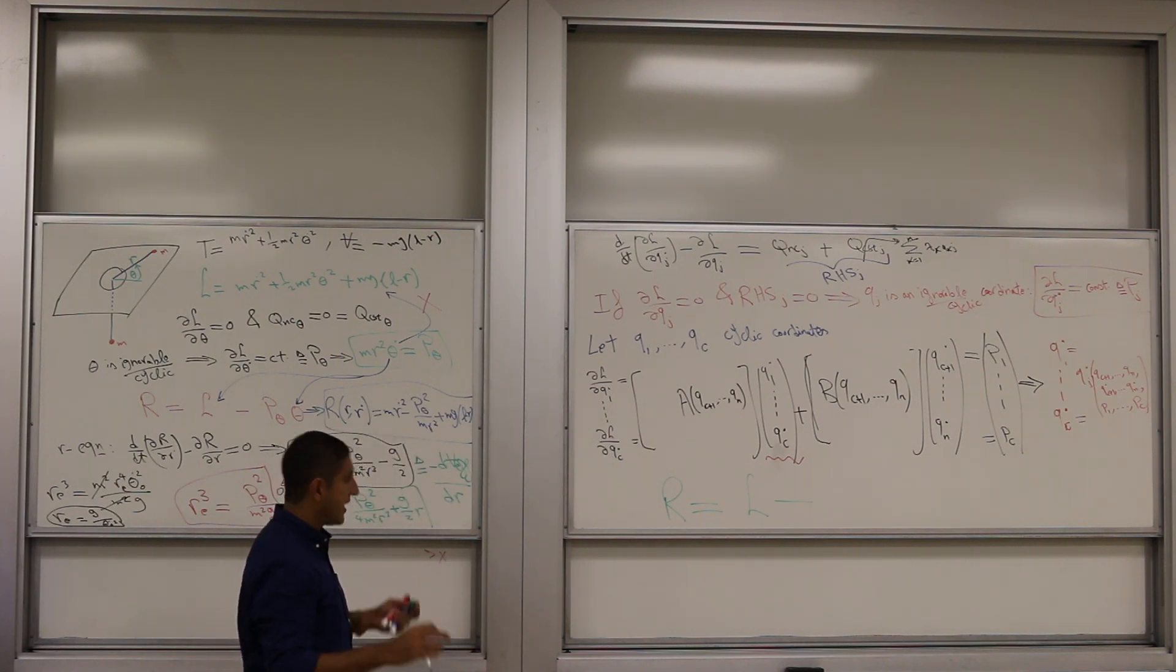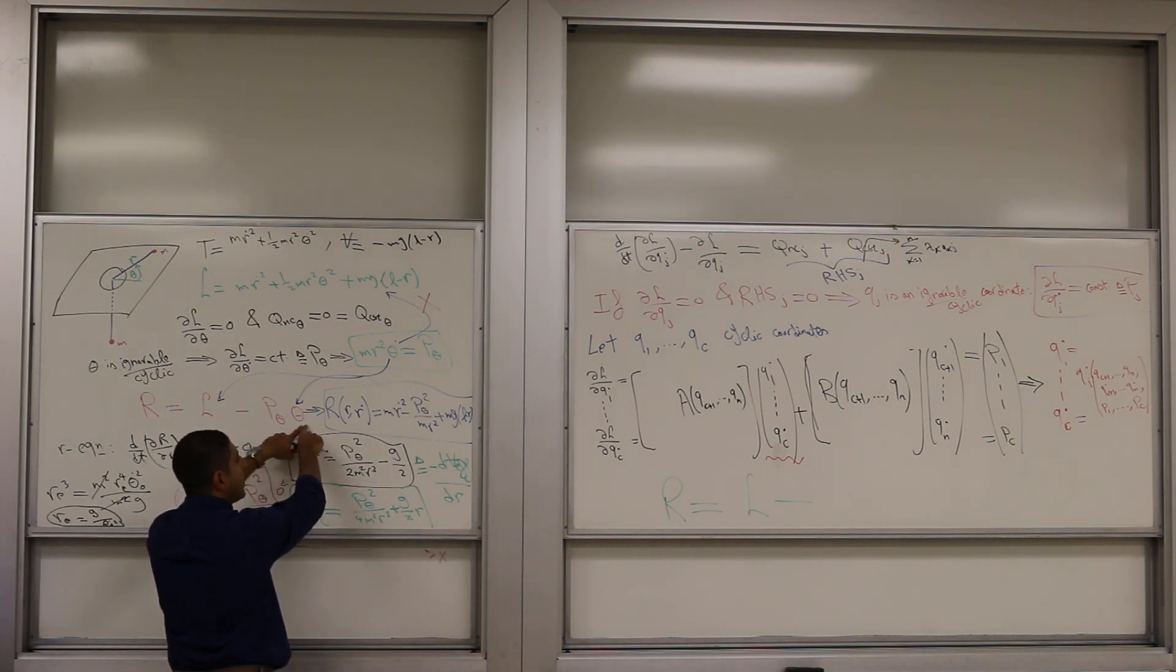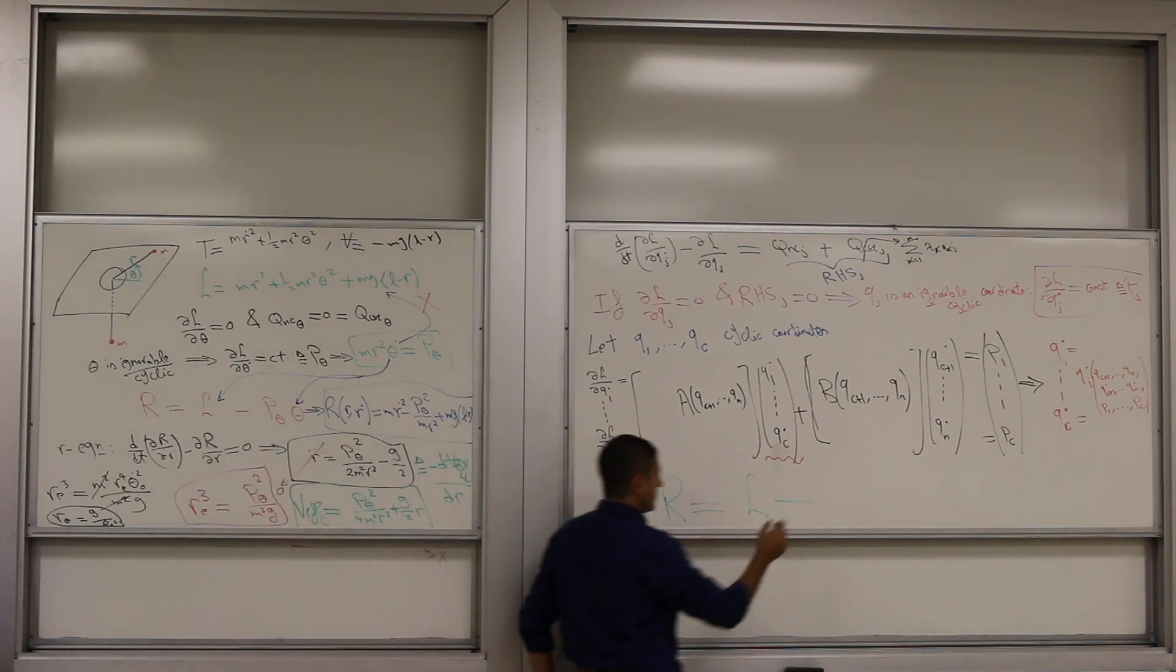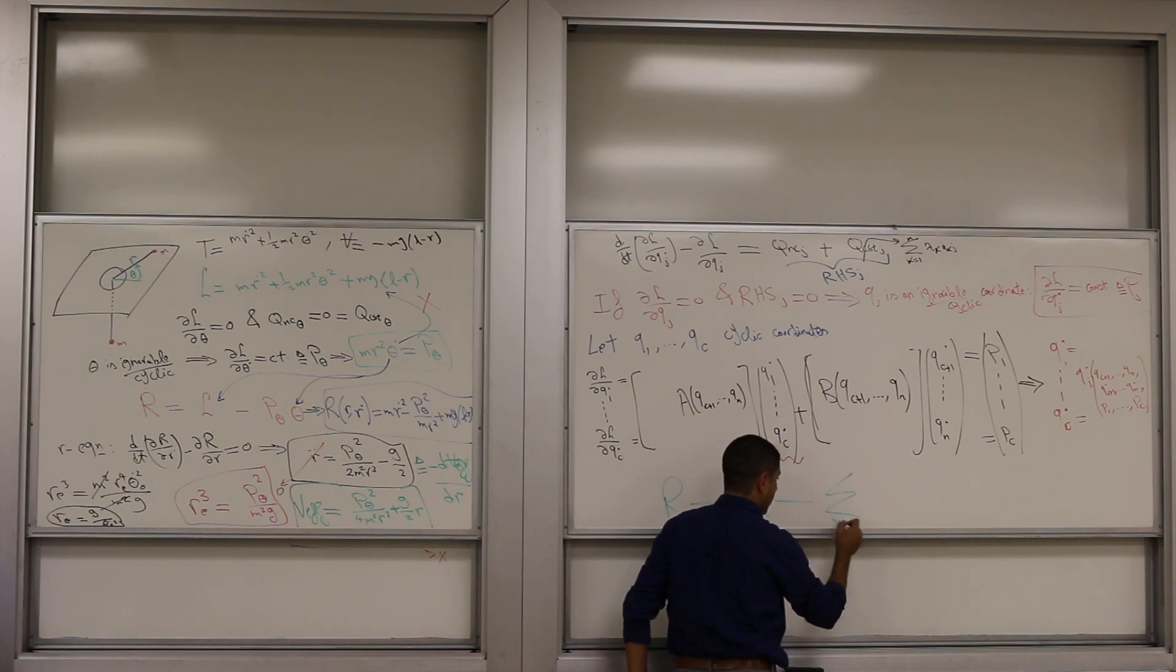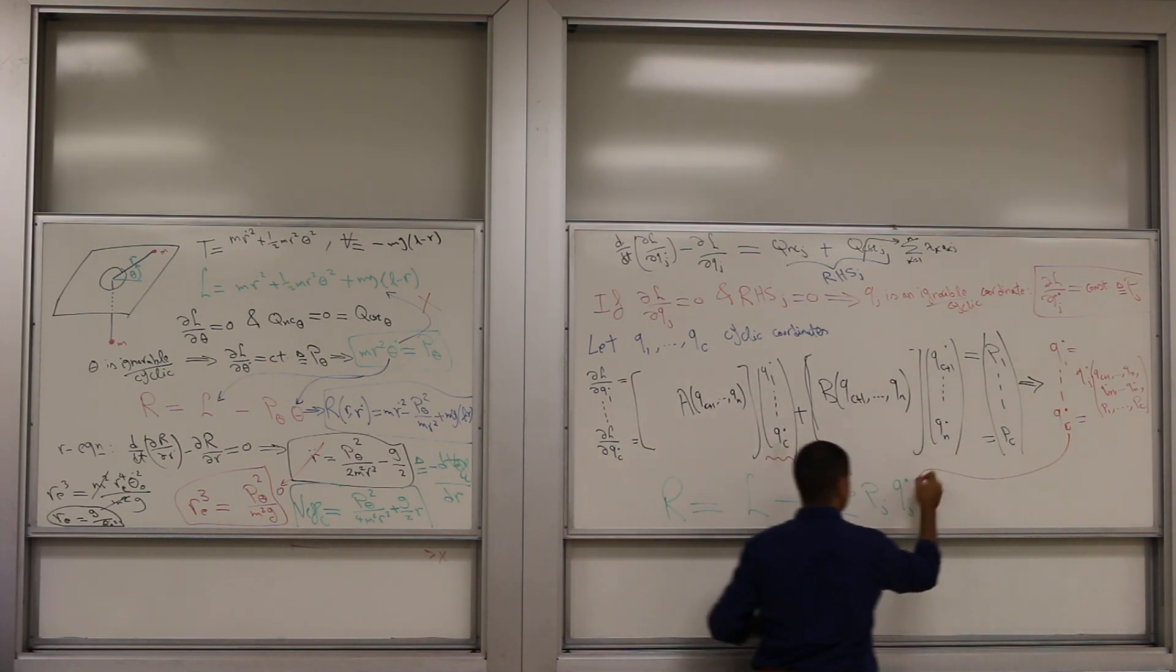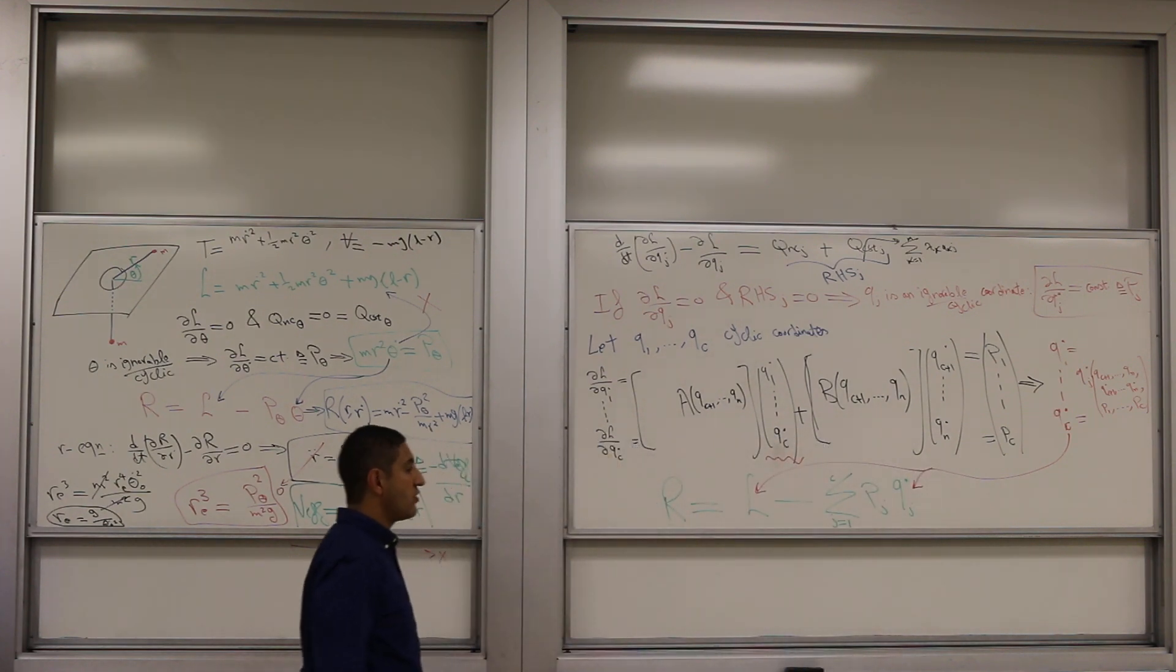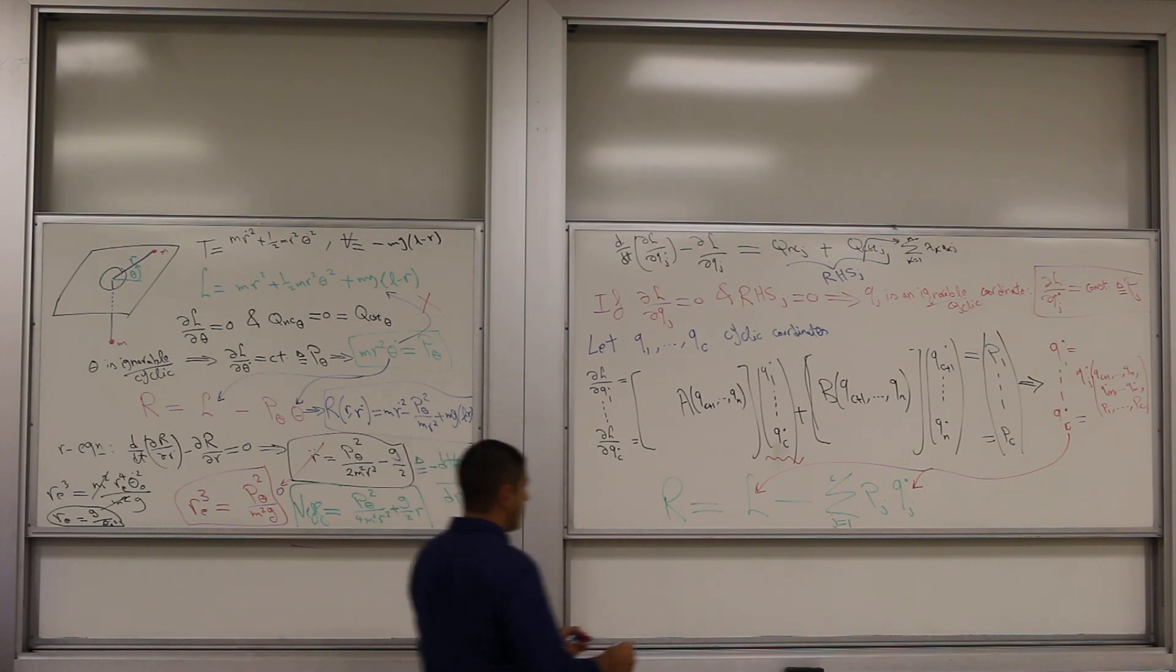Minus what? P theta, theta dot. Exactly, the p theta, theta dot kind of term. So each p times x q dot, right? So each one of these—because I have many—each p times qj dot. And I will take this, substitute it here, substitute it in Lagrangian. Now I got rid of these q dots.